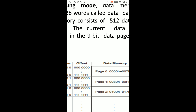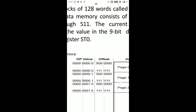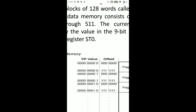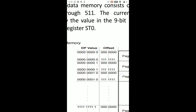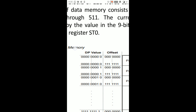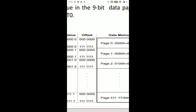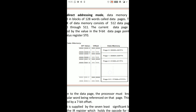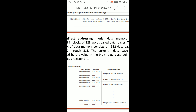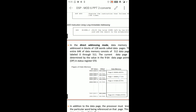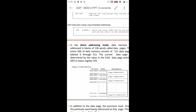The DP value is used to determine and identify the current data page. In addition to identifying the page, there are 512 pages total, and the DP value indicates which of the 512 pages is the current active page.